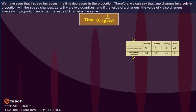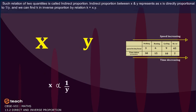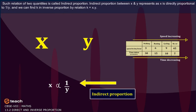Therefore, we can say that time changes inversely in proportion with the speed changes. Let x and y are two quantities. And if the value of x changes, the value of y also changes inversely in proportion such that the value of k remains the same. Such relation of two quantities is called indirect proportion. Indirect proportion between x and y represents as x is directly proportional to one by y. And we can find k in inverse proportion by relation k is equal to x into y.